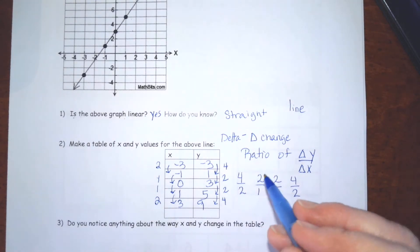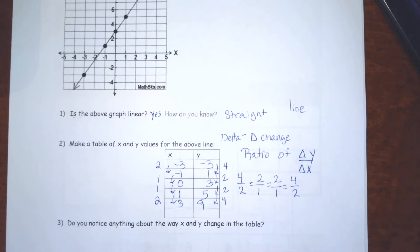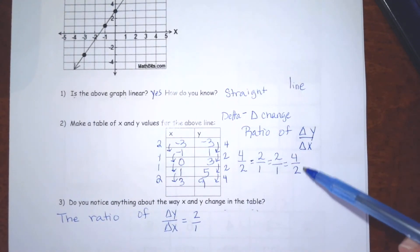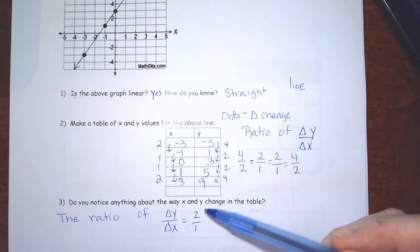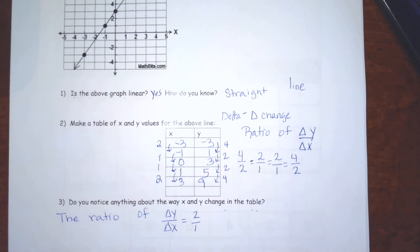Now, you need to simplify them. So we know when we simplify 4 over 2, we're going to get 2 over 1. So it does turn out that the ratio of the change in y over the change in x is constant. So do we notice anything about the way x and y change in the table? Yes, we do. The ratio of the change in y over the change in x is 2 over 1 all the way through. Even though it's 4 over 2 in a couple of places, it will simplify to 2 over 1. And we need to write it in the simplified version. So linear graphs have a constant rate of change.